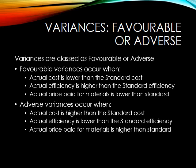Conversely, adverse variances are when our actual costs are higher than the standard costs. Again, this might be because the efficiency with which we use our materials is lower than the standard efficiency, or the amount that we're paying for our materials is higher than the standard.